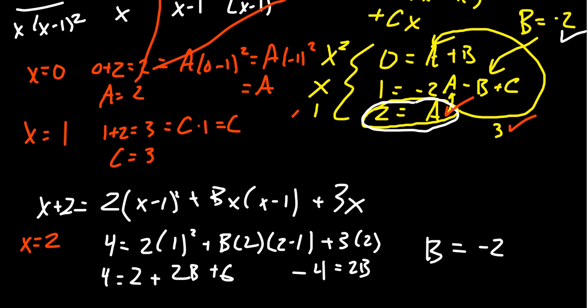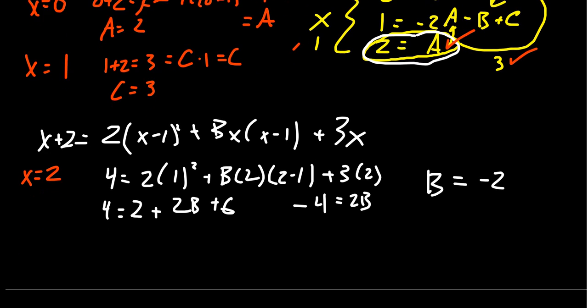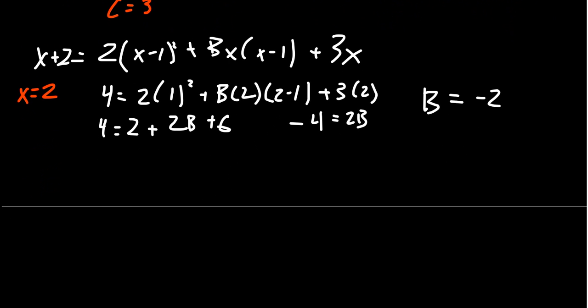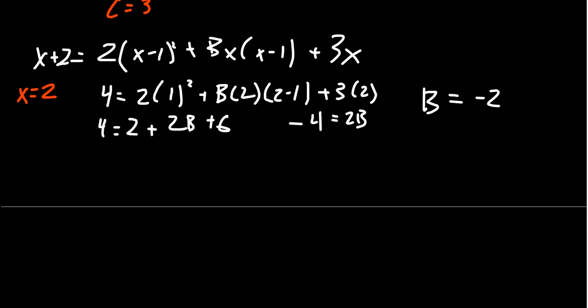The trade-off: annihilation finds some constants quickly, but with repeated factors, you'll still need to solve equations for the remaining unknowns. Partial fractions typically reduce to a system of linear equations, and it's worth being comfortable with that approach.